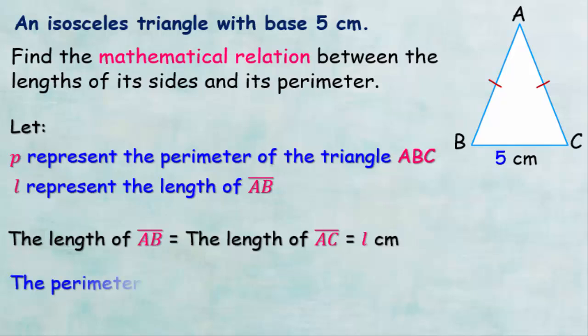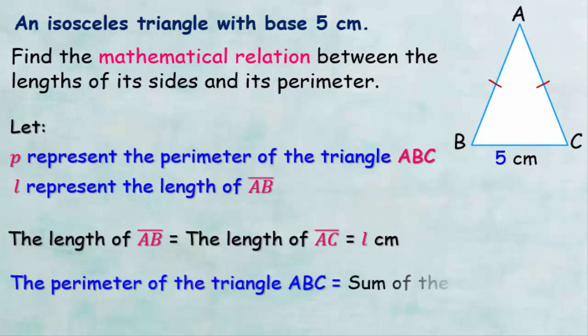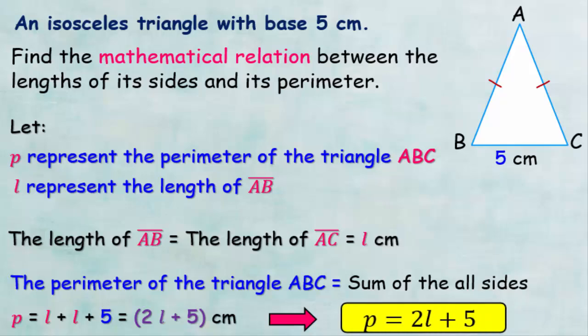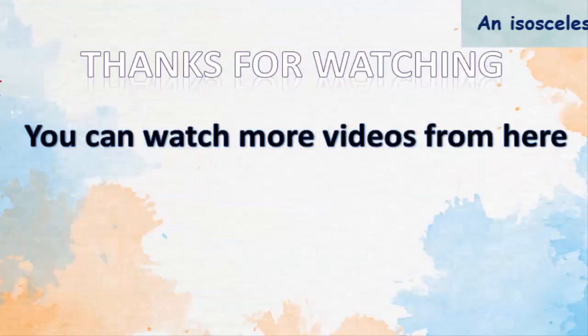We know that the perimeter of any triangle equals the sum of all its sides. Thus, the perimeter B equals L plus L plus 5, which is equal to 2L plus 5 centimeters. This is a mathematical relation representing the relationship between the length of the sides of the triangle and its perimeter. I hope the explanation was clear, and don't forget to practice by doing more exercises on this topic.